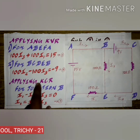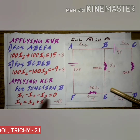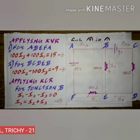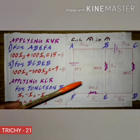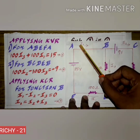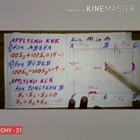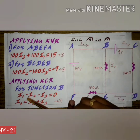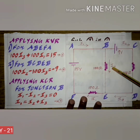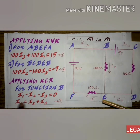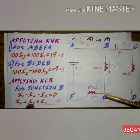Next we apply Kirchhoff's Current Rule at junction B. The algebraic sum of currents at a junction equals zero. Current entering the junction is positive; current leaving is negative. Current I1 moves towards junction B, so it is positive. Currents I2 and I3 both leave junction B, so they are negative. This gives: I1 minus I2 minus I3 equals zero, which rearranges to I1 equals I2 plus I3. This is Equation 3.